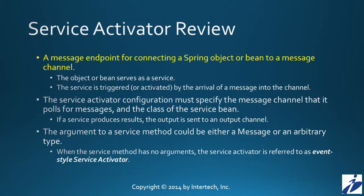When configuring a service activator, you have to specify both the message channel that the service activator is going to pull on, as well as the message channel that is going to receive results, should the service activator actually produce results. The argument to our service activator's service method can be either a message or some object of an arbitrary type. However, a service activator doesn't have to receive any kind of input, in which case the service activator is referred to as an event-style service activator — one that just triggers the service as opposed to dealing with any data from the message.